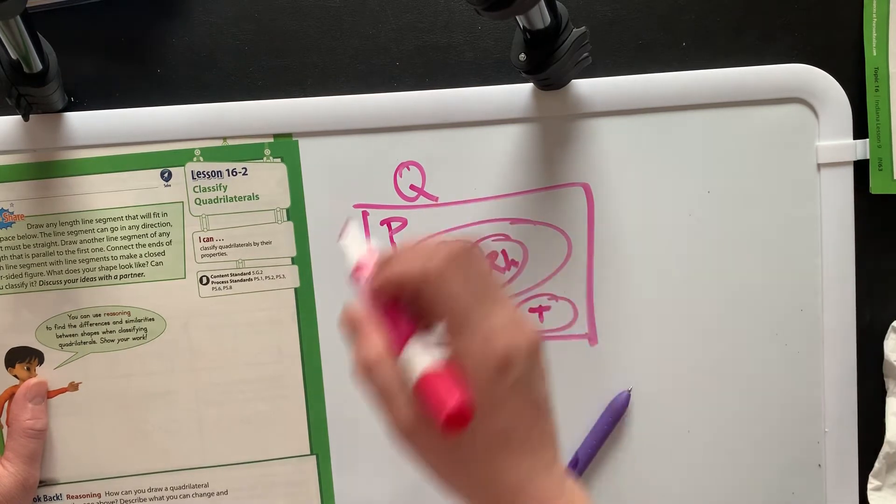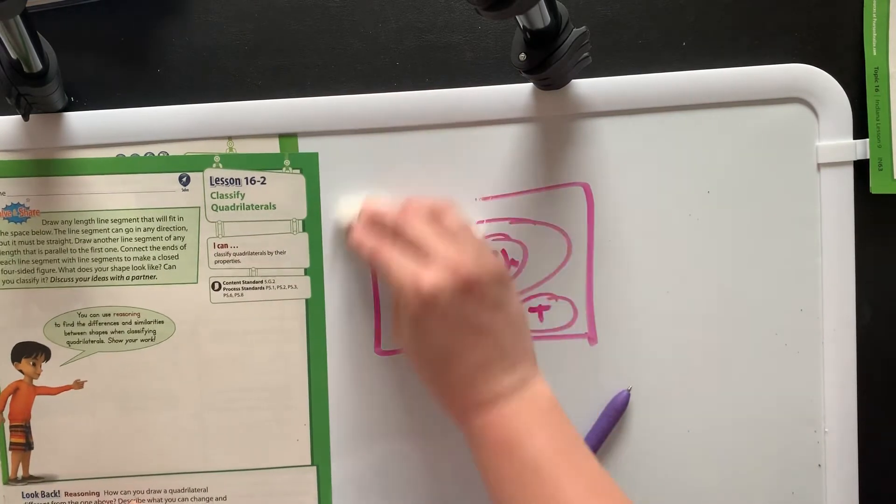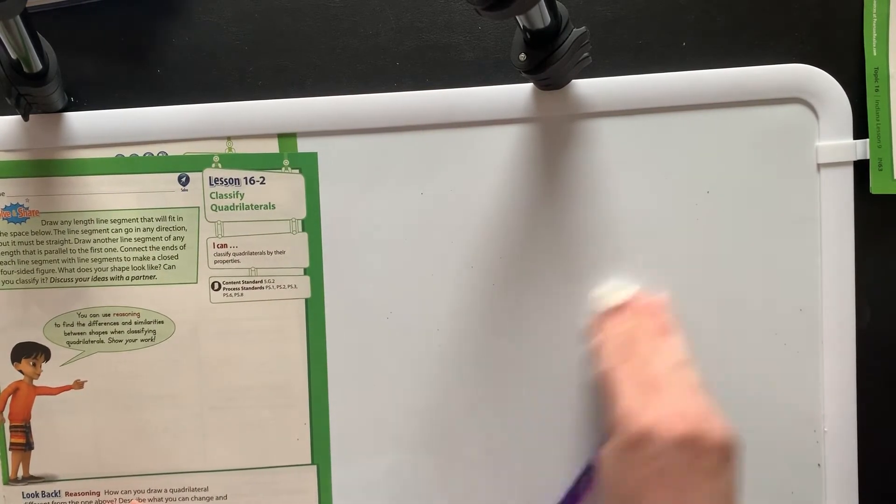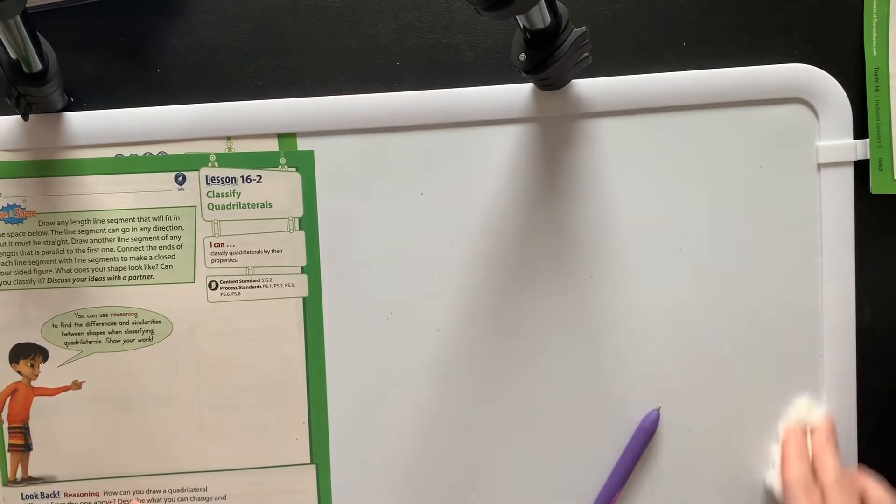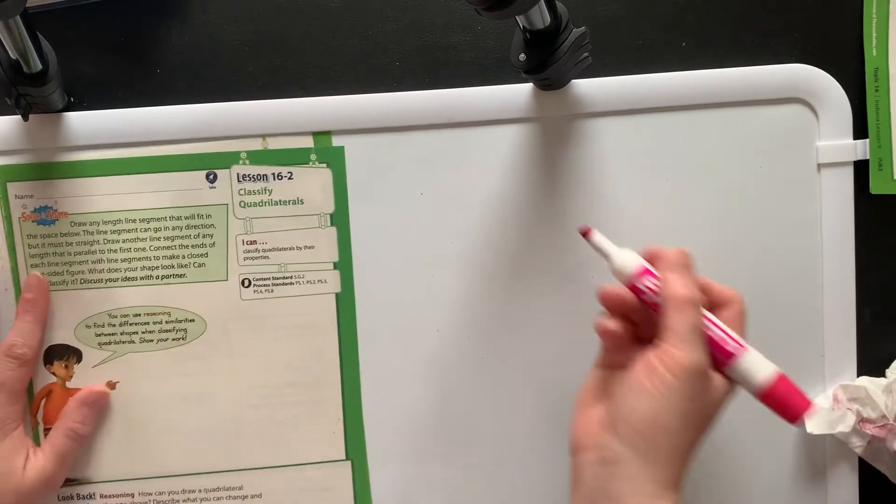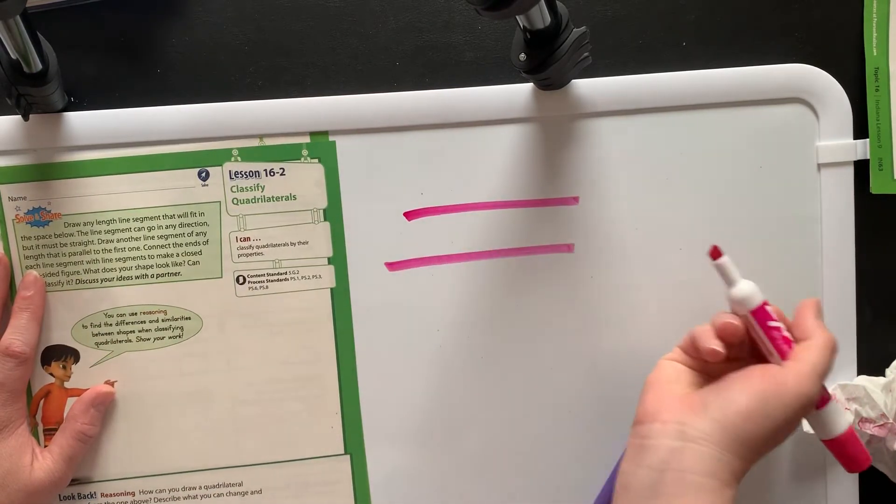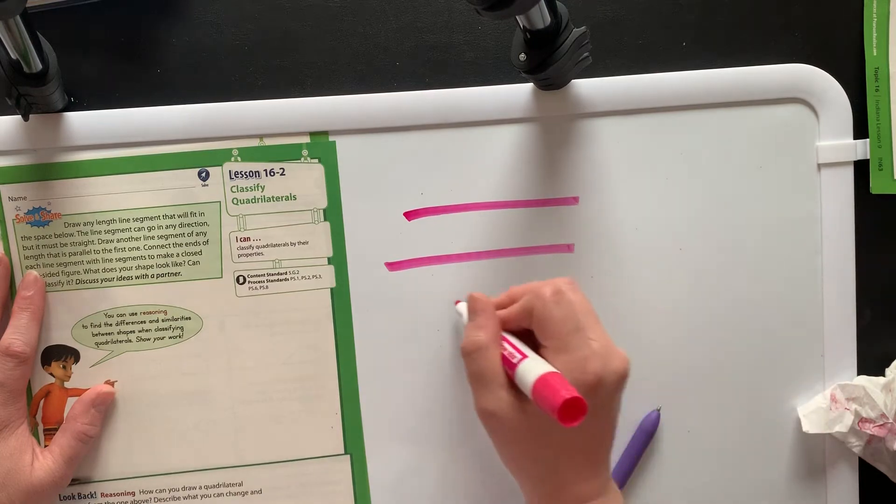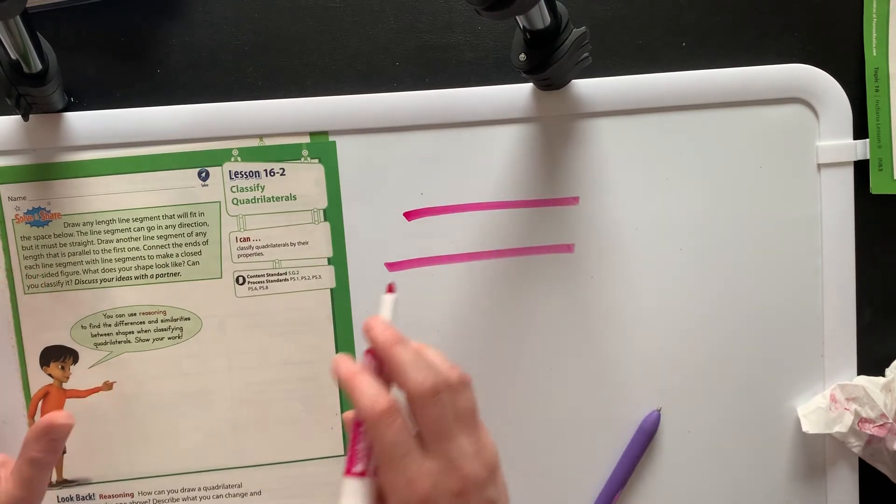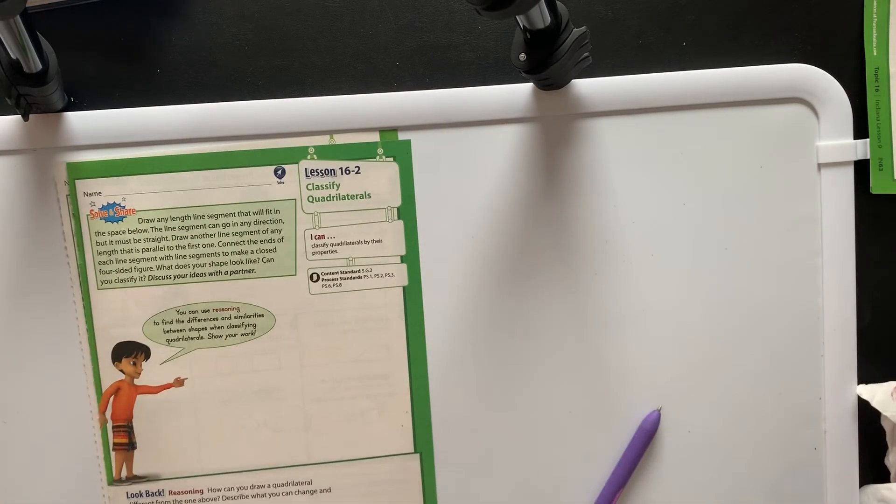If you're not sure what any of this means, I would definitely go back and watch that first video because I think you're going to find that really useful. You need to know the different shapes. The other thing you need to know about classifying quadrilaterals is we're going to be talking about two different things: whether or not sides are parallel and whether or not sides are the same length.